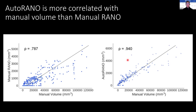We checked what the correlation was between the RANO measure and total volumetric burden. Interestingly, you can see here that manual volume versus auto RANO was correlated better with the manual tumor volume than manual RANO was. Thus, auto RANO can be seen as a more accurate measure of tumor burden, in addition to being fully automated.